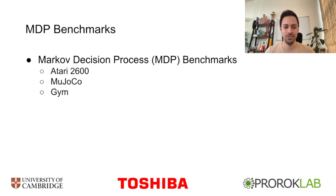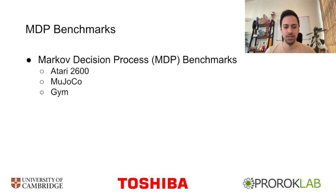We've seen a similar emergence of benchmarks, or collections of tasks and environments, in reinforcement learning. For example, we have Atari 2600, MuJoCo, and GYM, each of which contain a large number of tasks. Unfortunately, nearly all tasks in these benchmarks are fully observable Markov decision processes, also known as MDPs.